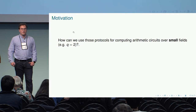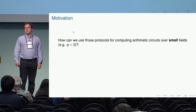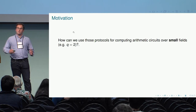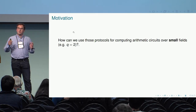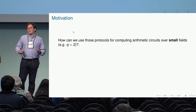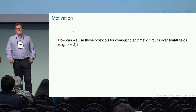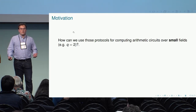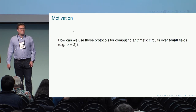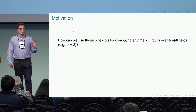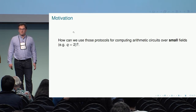So the question is: is there any way that we can use these protocols that work over large finite fields when our function is more naturally represented as a circuit over a small field? For example, comparison of bit strings, or set intersection. I'm going to talk mainly about binary fields, but our results work for any small fields.